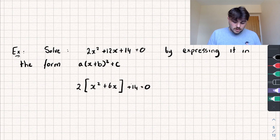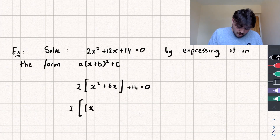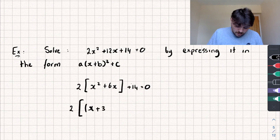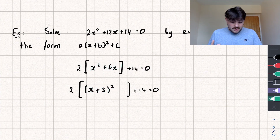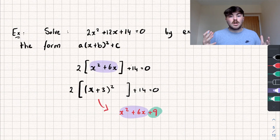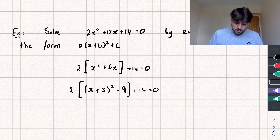Now the coefficient of x squared inside the square bracket is 1, so we can complete the square of what's inside. The coefficient of x is positive 6, so we half it to get positive 3. Inside the square bracket we write x plus 3, all squared. Expanding that gives x squared plus 6x plus 9. The first two terms match, but we have an unwanted plus 9, so we subtract 9. We've now got the expression pretty much in completed square form inside the square brackets.